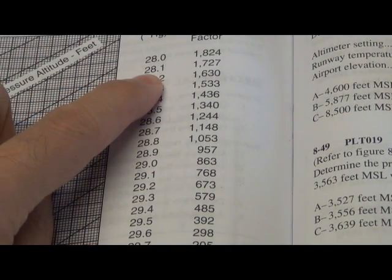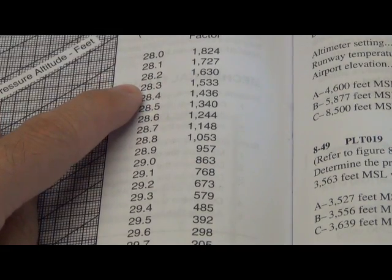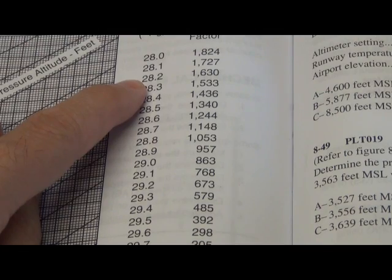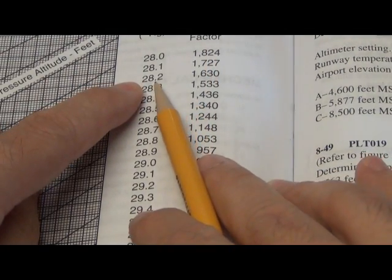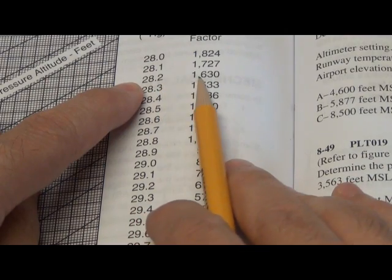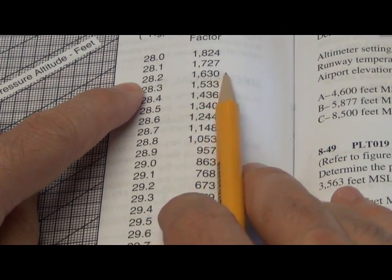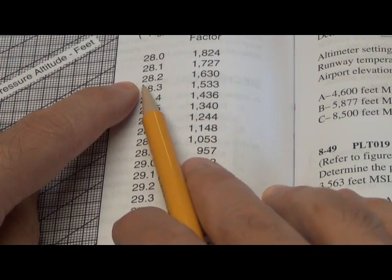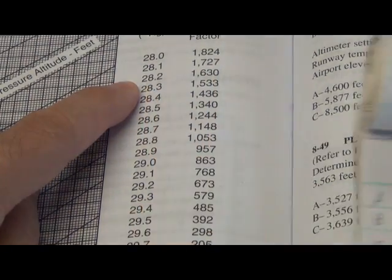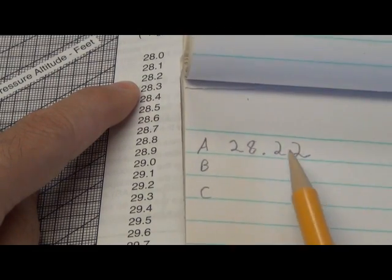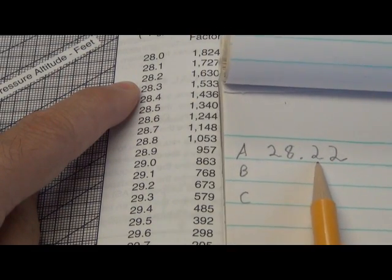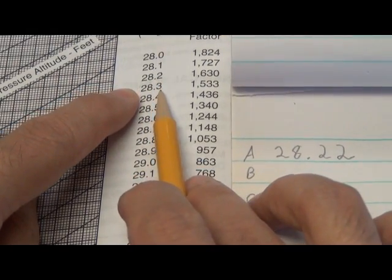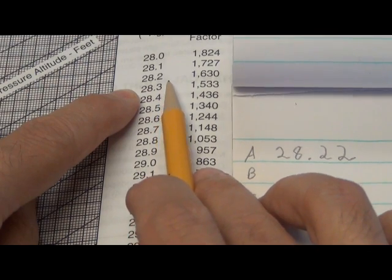Here's 28.1. Here's 28.2. Here's 28.3. So there's no 28.22. If the question had just asked for 28.2, then I could have just looked across to the table and found the conversion factor to be 1,630 feet. But it isn't. It's somewhere between, the actual number that we're looking for is 28.22. We're looking for the conversion factor associated with that. But there is no 28.22. There's 28.2 and there's 28.3. So we have to interpolate.